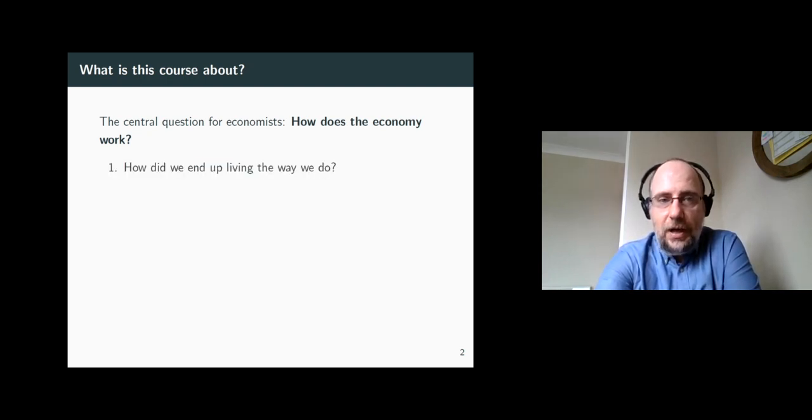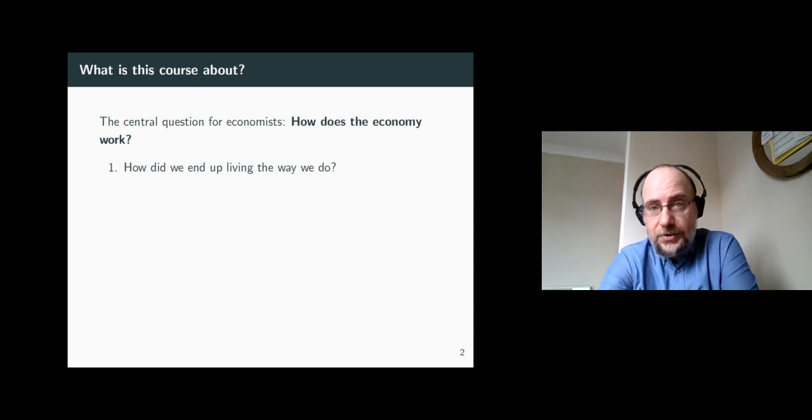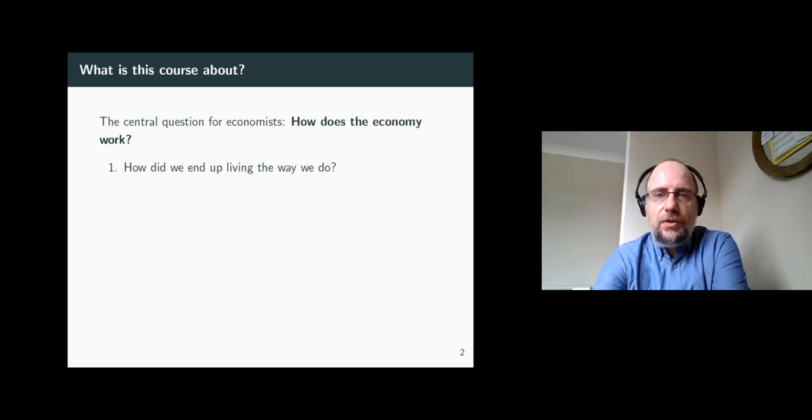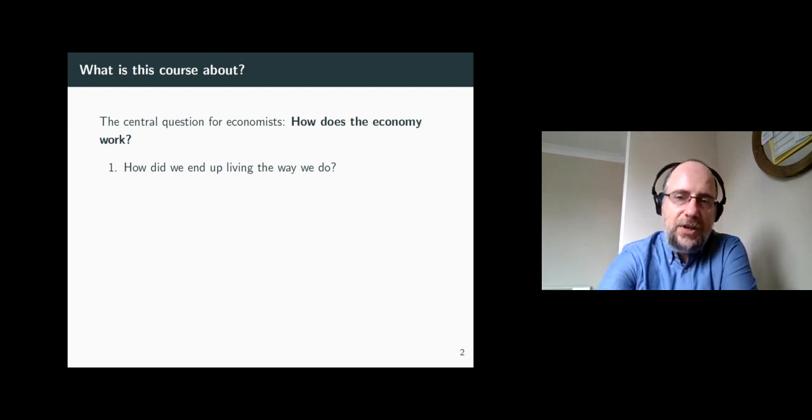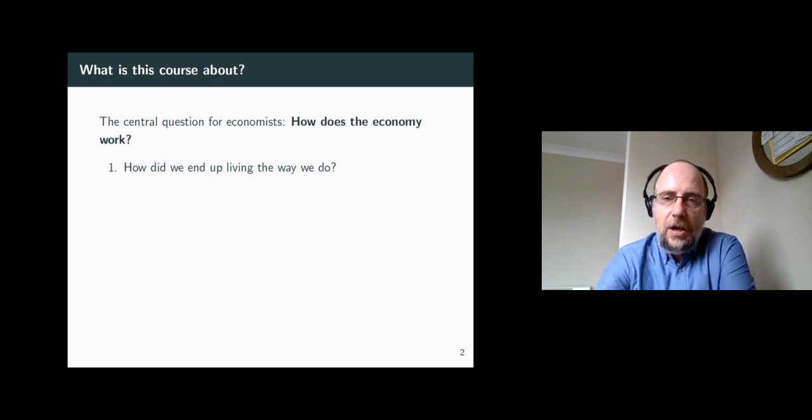Some of the questions we address as economists are, for example, how did we end up living the way we do? What made this generation live better or worse than the previous generations? For example, the average person now in most countries across the globe lives much better than their predecessors. However, at the same time we now enjoy less clean environment and live in a more unequal and politically more unstable society than a generation ago. What led to those changes?